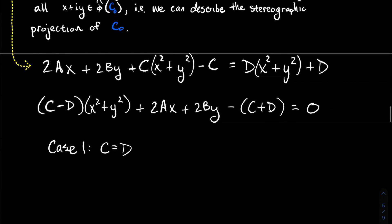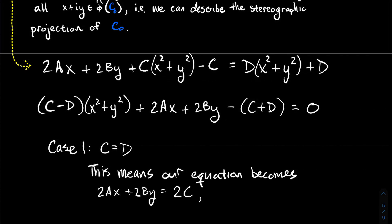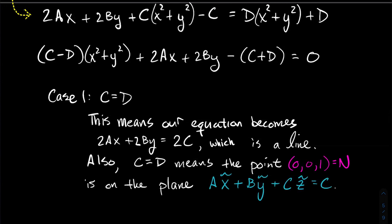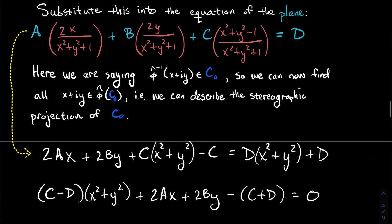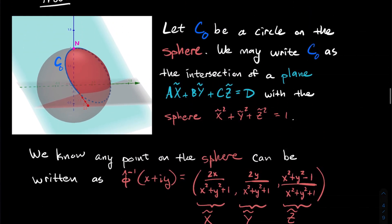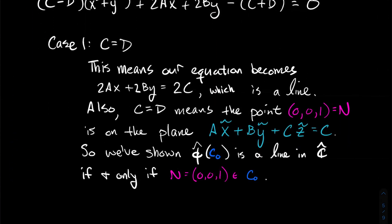Case 1: if c equals d, then the x²+y² terms vanish and the equation becomes 2ax + 2by = 2c — the standard form equation of a line. Also, plugging the north pole (0,0,1) into the plane equation gives c = c, which is true, so the north pole lies on the plane and hence on the circle. This shows: the stereographic projection of our circle on the sphere is a line if and only if the north pole is on that circle.